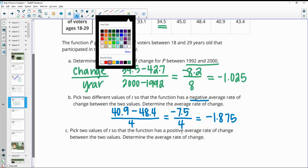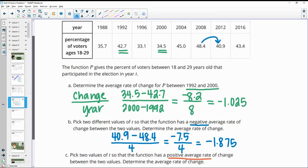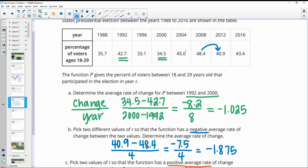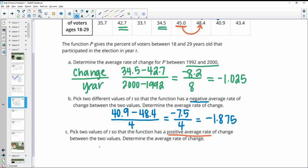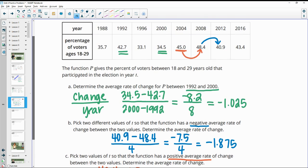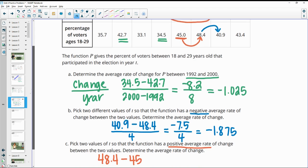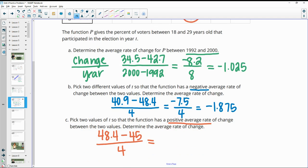Then part C wants us to get a positive average rate of change. So now the numbers that we pick need to go up. So now we need to go up from the one that we start to the one that we end. So if I look here at 45 and I go to 48.4 for 2004 to 2008, that's going to give me a positive rate of change. So again, we'll put our new number, 48.4, minus our first number. And then that was a change in four years because it's from 2004 to 2008. So we'll divide that by four. So 48.4 minus 45 gives us a 3.4% increase in those four years. So if we divide by four, that gives us an average rate of change of 0.85% per year.